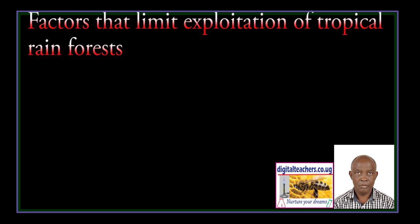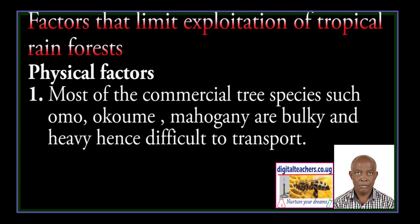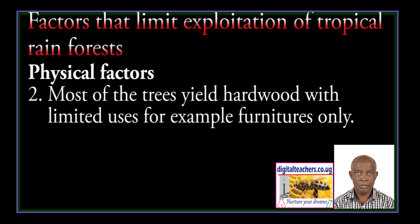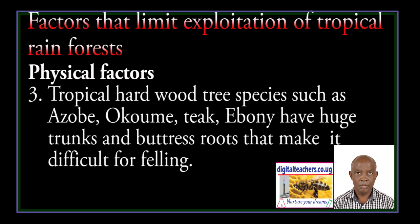Factors that limit exploitation of tropical rain forests: Most of the commercial tree species, such as Omo, Okume, Mahogany, Abaruke, and Heve, are difficult to transport. Most trees yield hardwood with limited uses, for example furniture only. Tropical hardwood tree species such as Azobe, Okume, Teak, and Ebony have huge trunks and buttress roots that make felling difficult.